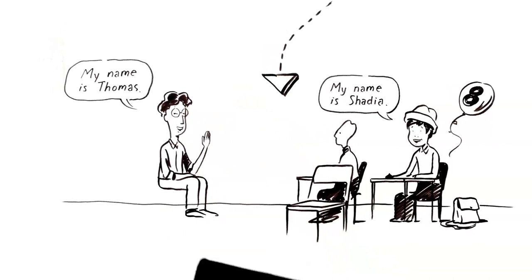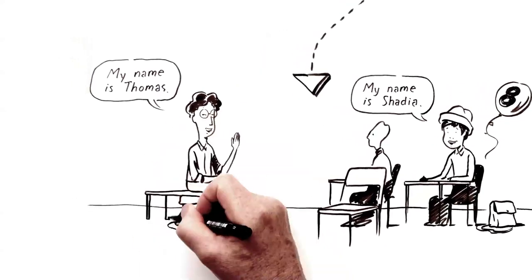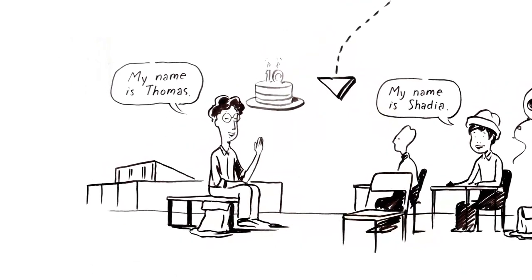My name's Thomas. I'm 17 years old. I'm in year 11 and I found out I was autistic at age 10.